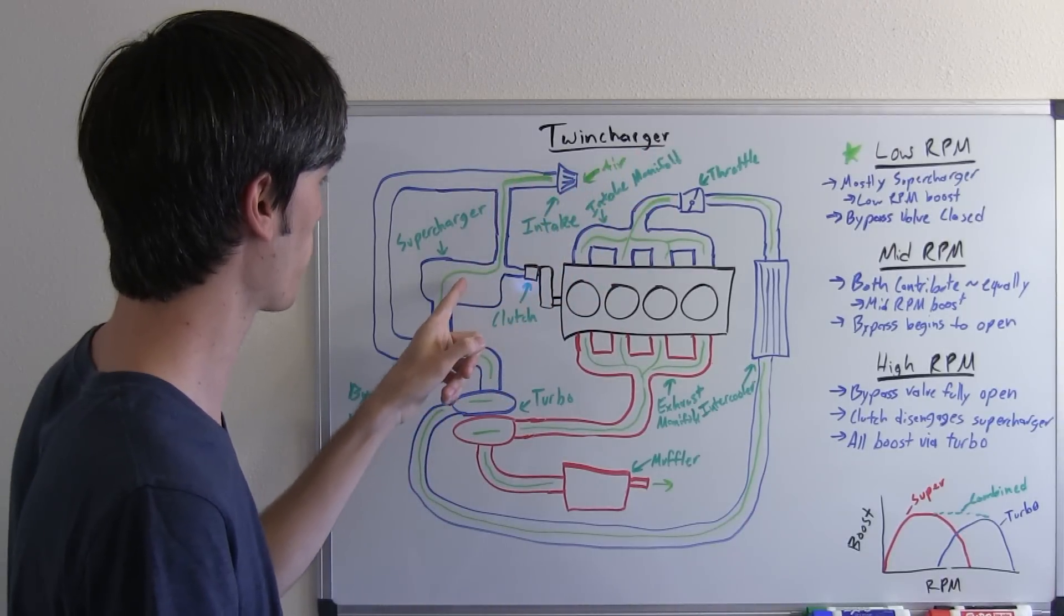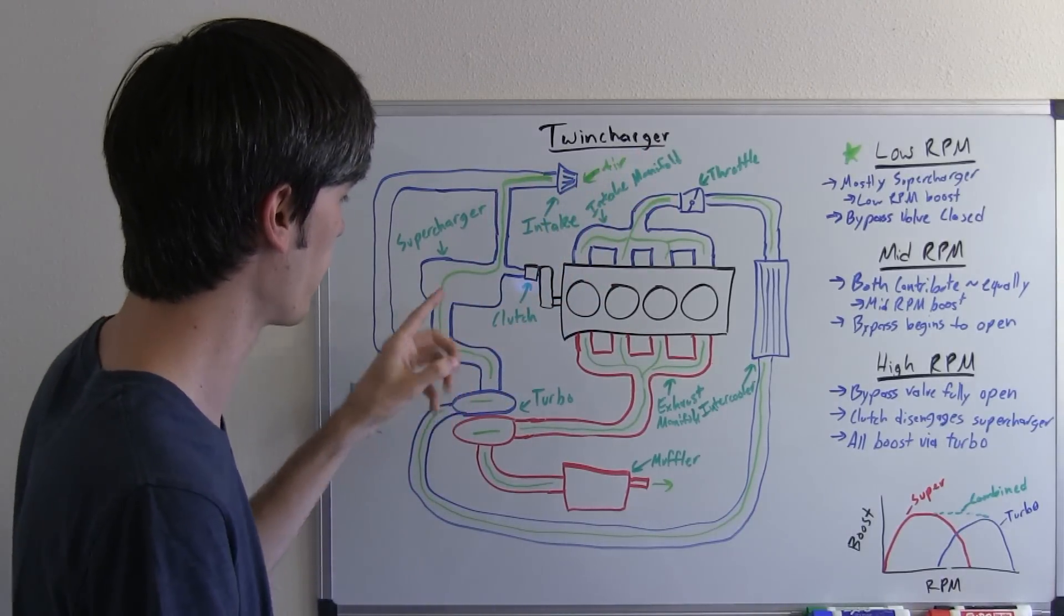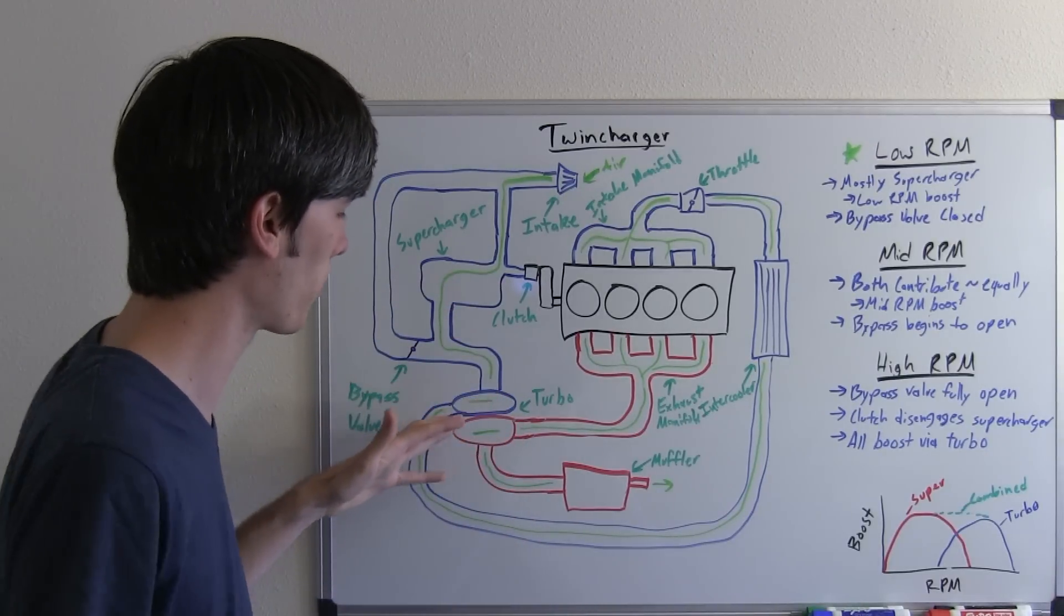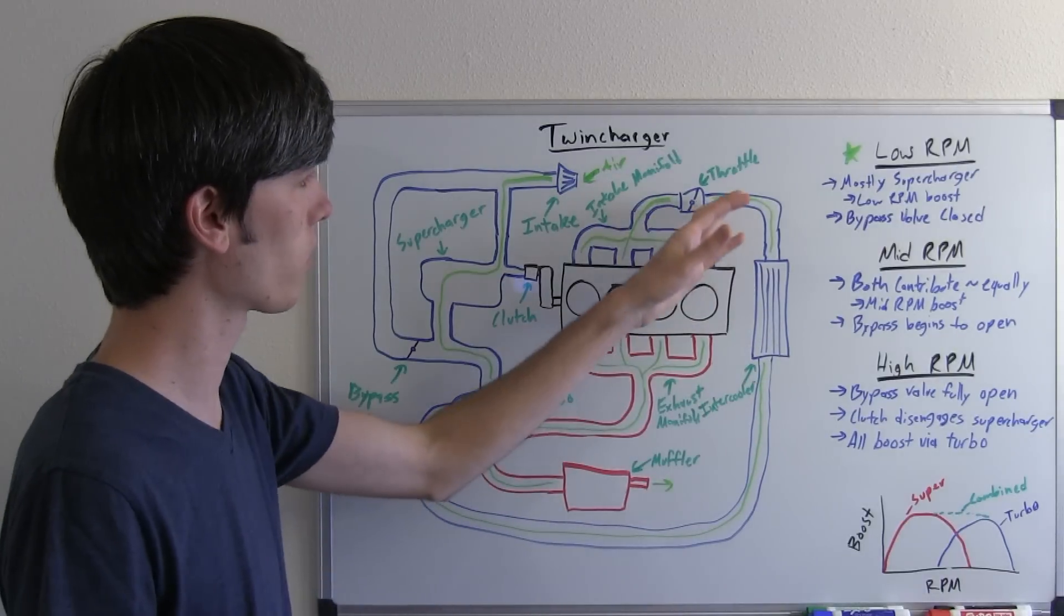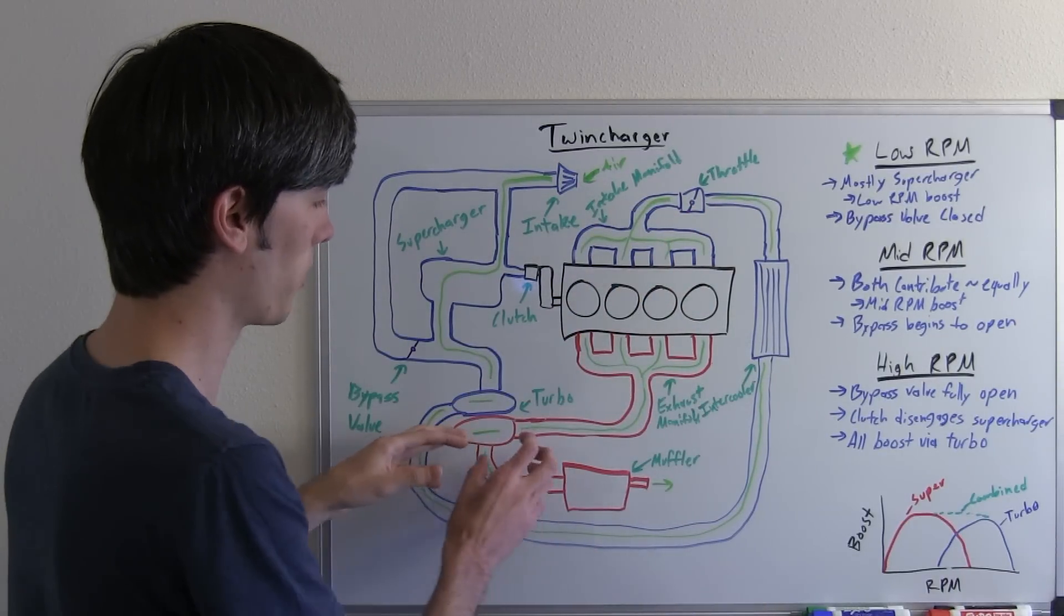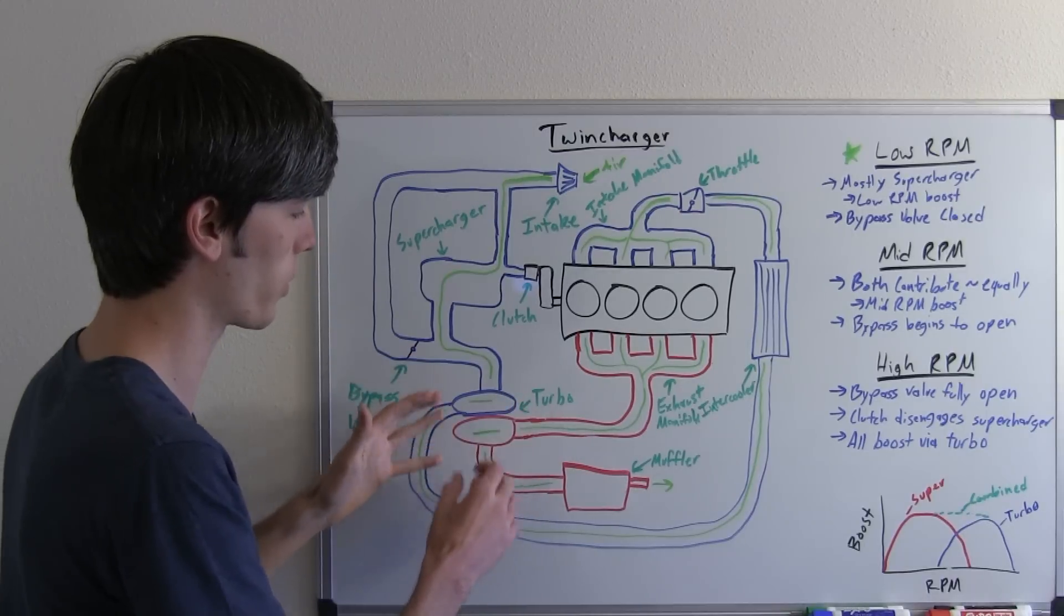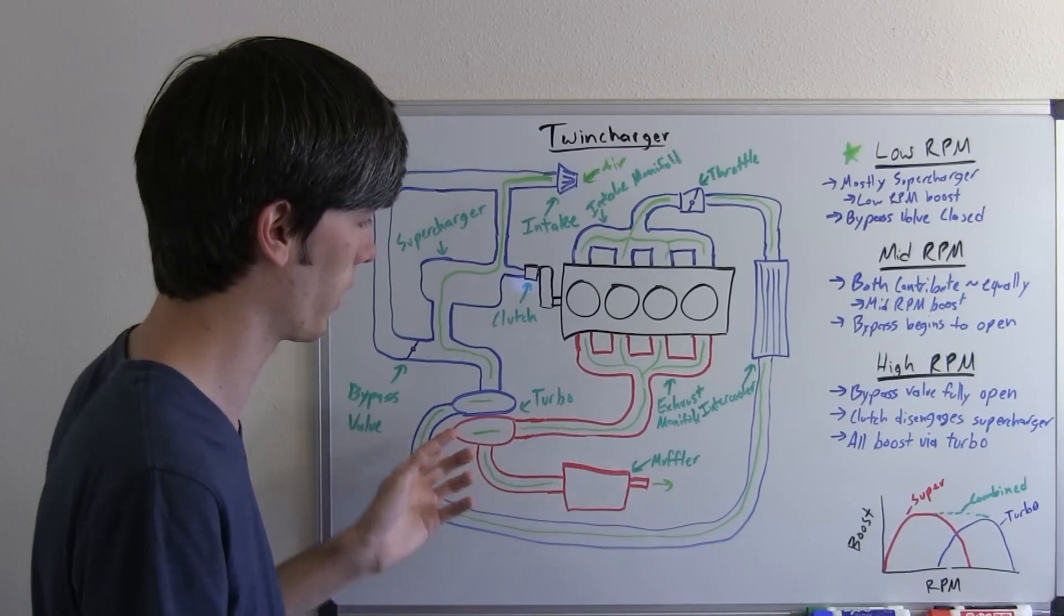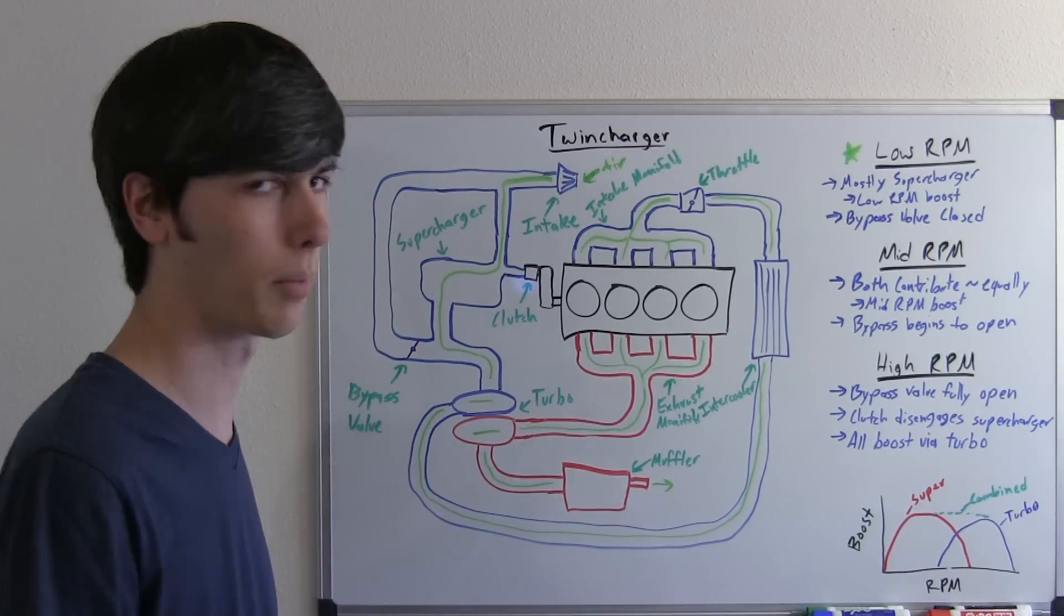Which is going to compress it, create boost. It'll then go through the turbocharger, which may do a little bit but probably not that much, then go through an intercooler and into the engine, out the exhaust. Now because this turbocharger is a larger turbocharger, this isn't enough exhaust to really spool it up, so it's not going to be doing too much work here, and then it'll just simply feed out the muffler.